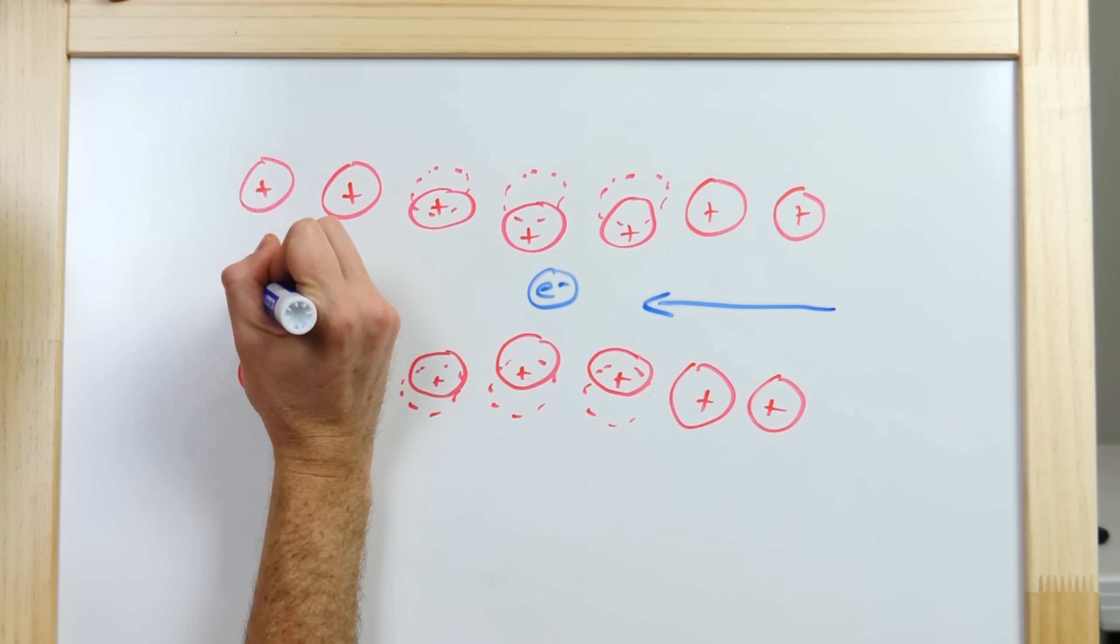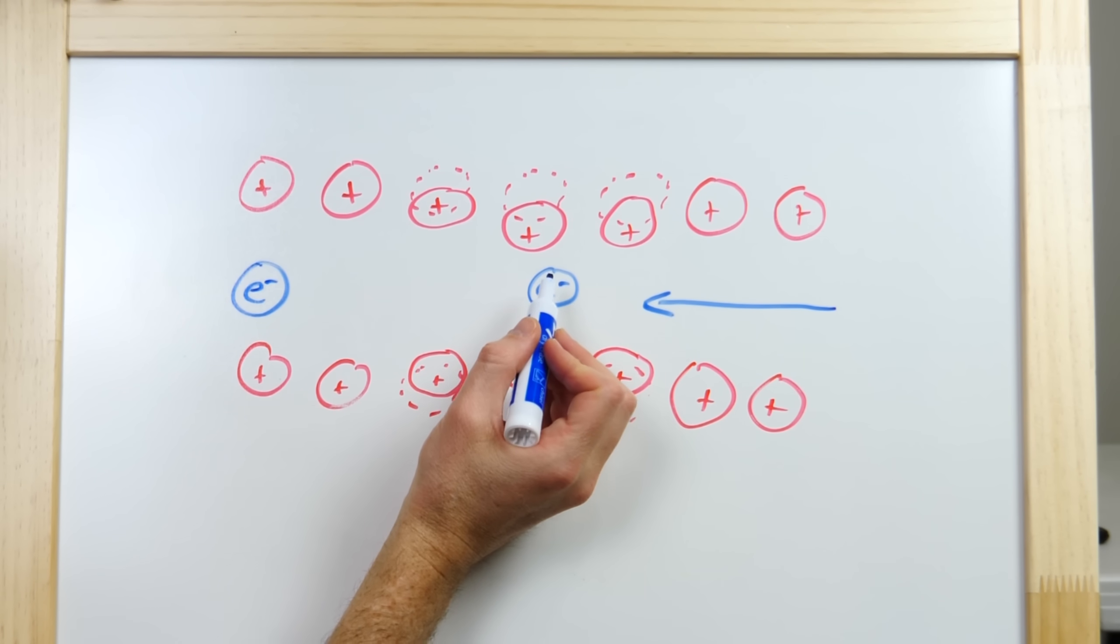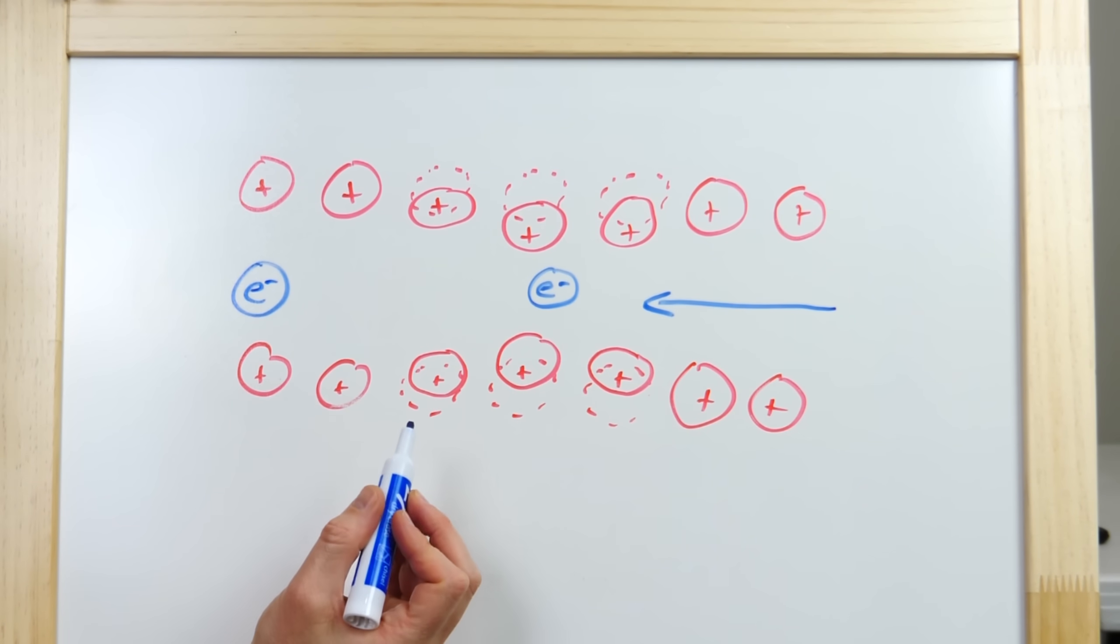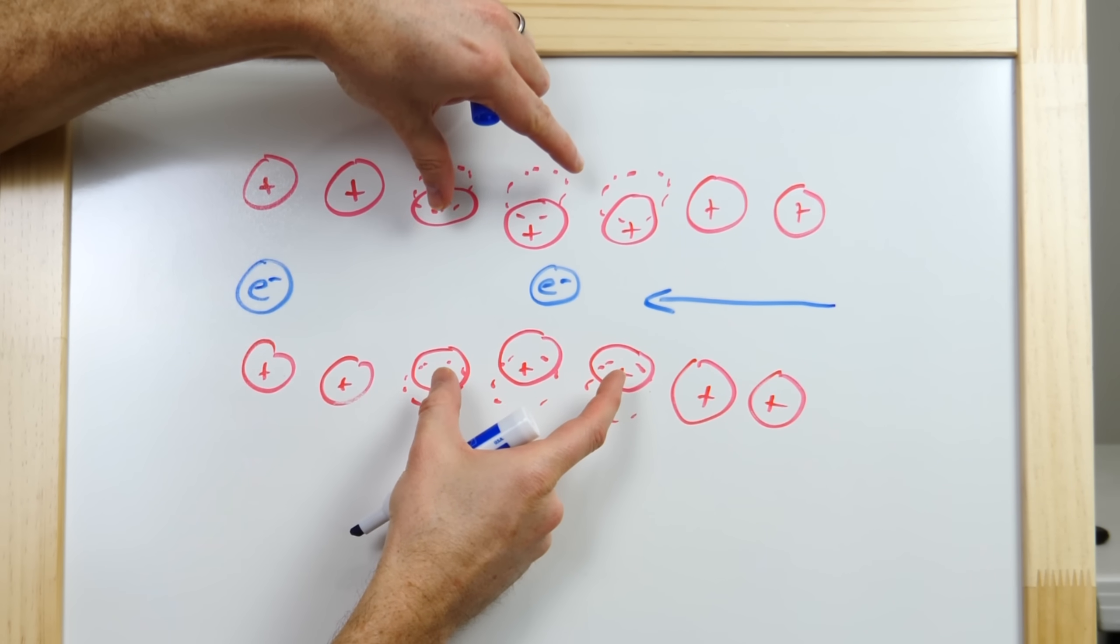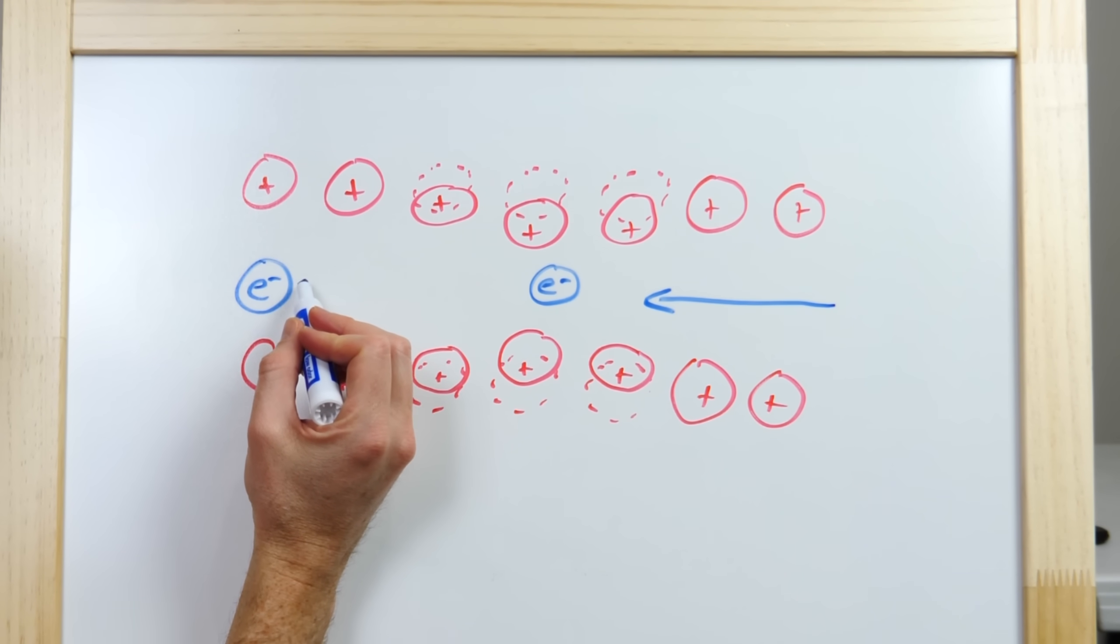So, an electron that's over here moving this way, it actually doesn't feel repelled by this electron, but it actually feels like it wants to go towards it because it kind of gathered these positive charges near it. So, this feels a little bit attracted to the electron.